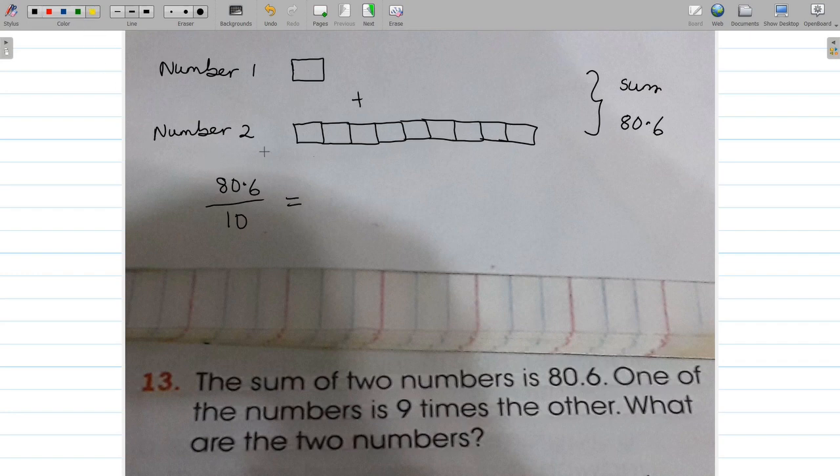So here we'll draw on our knowledge of division of decimals by base 10. This will give us 8.06. So this means that one portion, or the first number, has a value of 8.06.